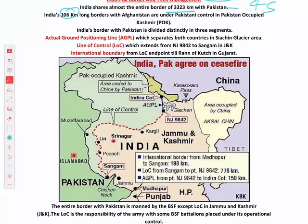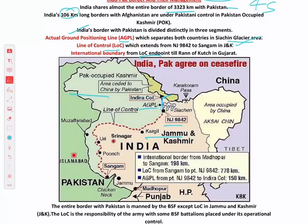The 106 km border with Afghanistan is under POK. India's border with Pakistan is divided into three segments: AGPL in the Siachen Glacier area (between NJ9842 and Indira Col), then the Line of Control in the J&K region separating POK and J&K, and then the International Boundary Line from the LOC endpoint onwards — which is mutually decided, ratified, and accepted by the rest of the world.